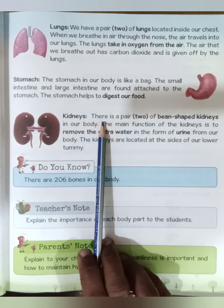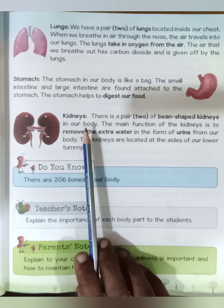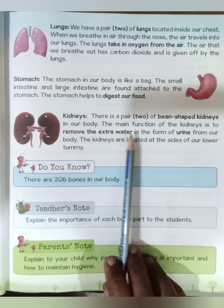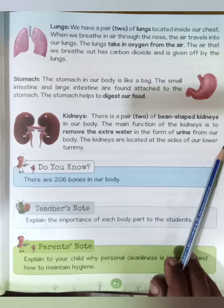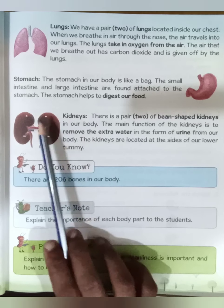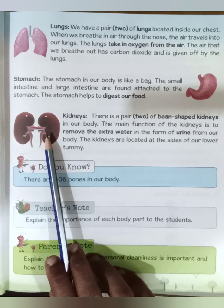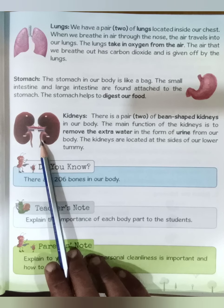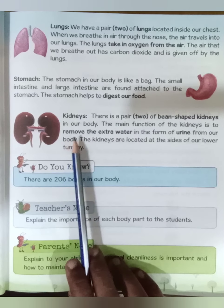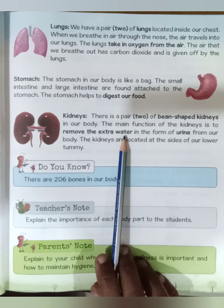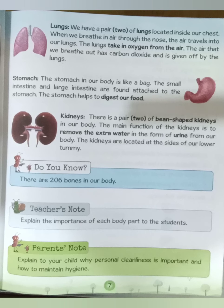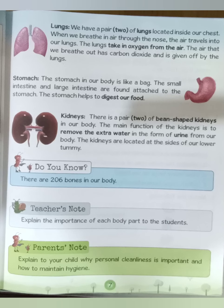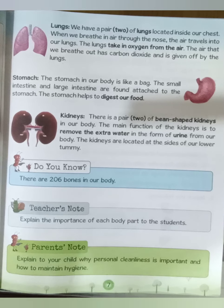The next organ is the kidneys. There is a pair of bean-shaped kidneys in our body. The main function of the kidneys is to remove extra water in the form of urine from our body. So in this chapter we have learned about the external body parts and internal body parts, and also about their functions. Thank you.